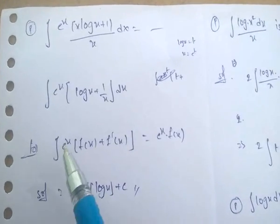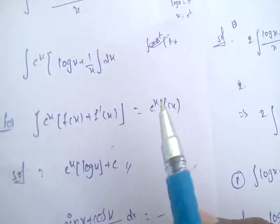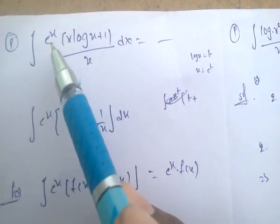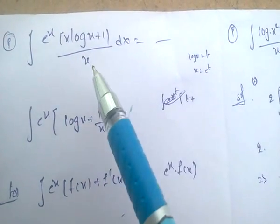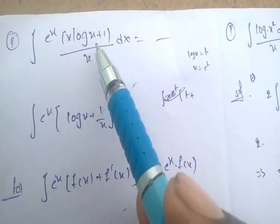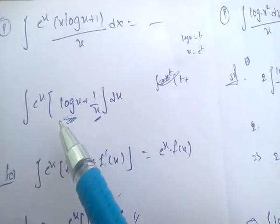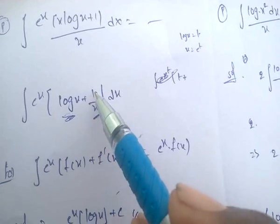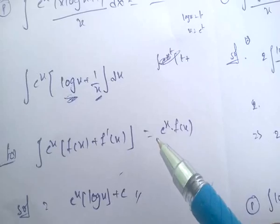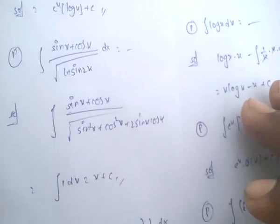One more important formula: integral of e^x · [f(x) + f'(x)] dx equals e^x · f(x). For example, integral of e^x · (log x + 1/x) dx: here f(x) equals log x and f'(x) equals d/dx of log x equals 1/x. So it is in the form e^x·[f(x) + f'(x)], giving the answer e^x · log x plus c.